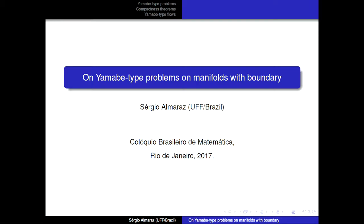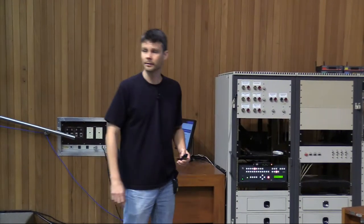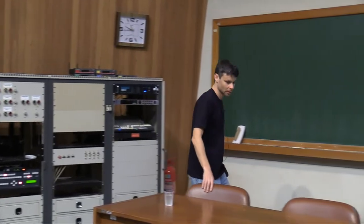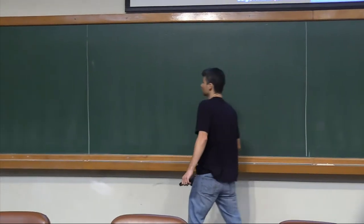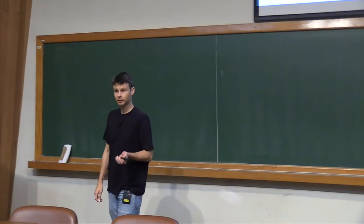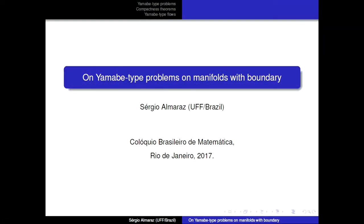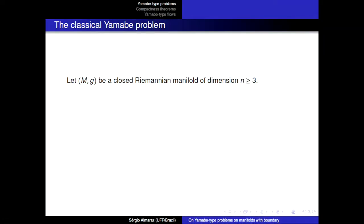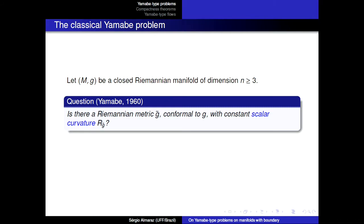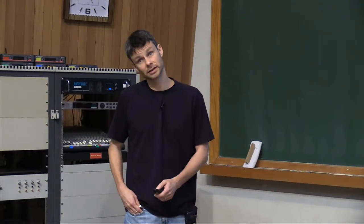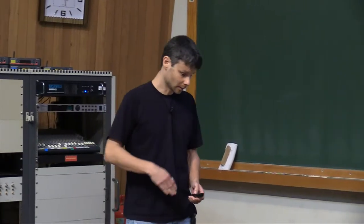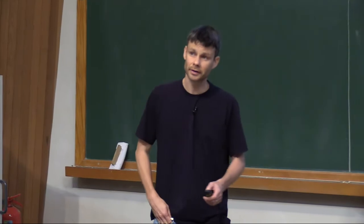Thank you for inviting me. I'm going to do a little survey on the Yamabe-type problem on manifolds with boundary. I start with the classical Yamabe problem, which is for closed Riemannian manifolds — that means compact without boundary. The question is whether you can find a metric in a given conformal class such that the scalar curvature is constant. This is an extension of the uniformization theorem for Riemann surfaces.